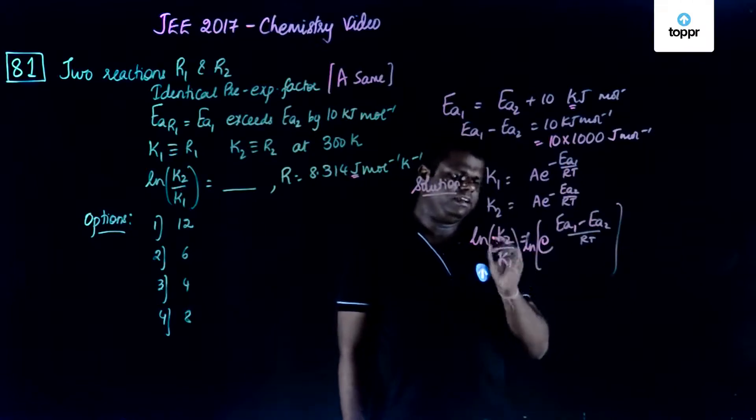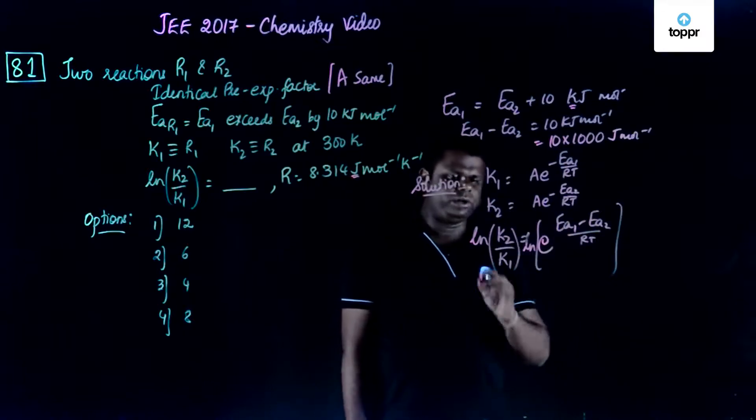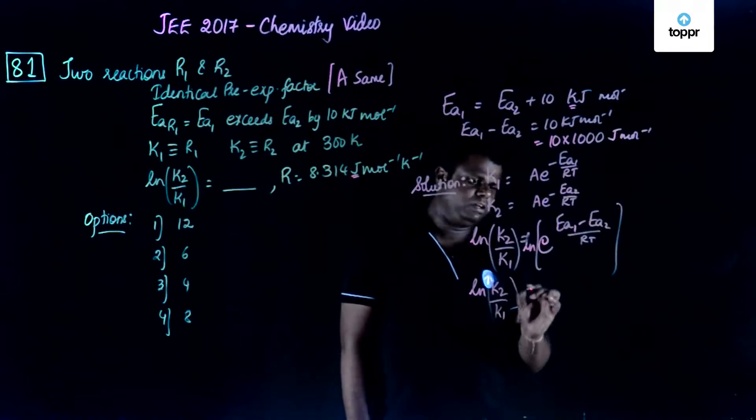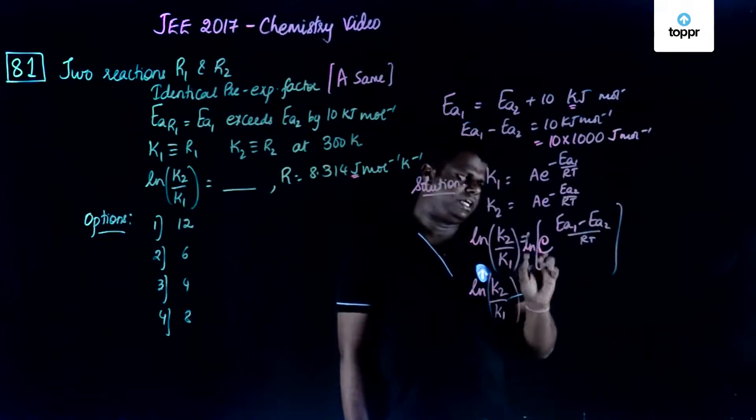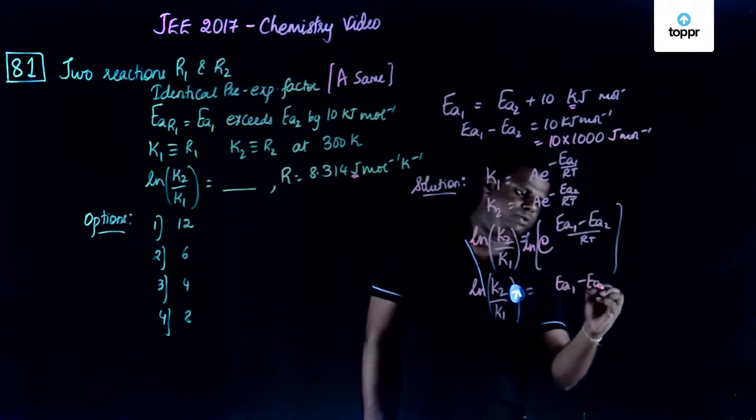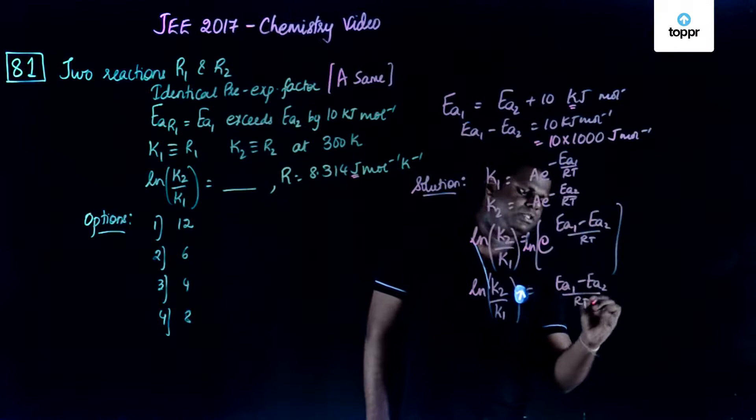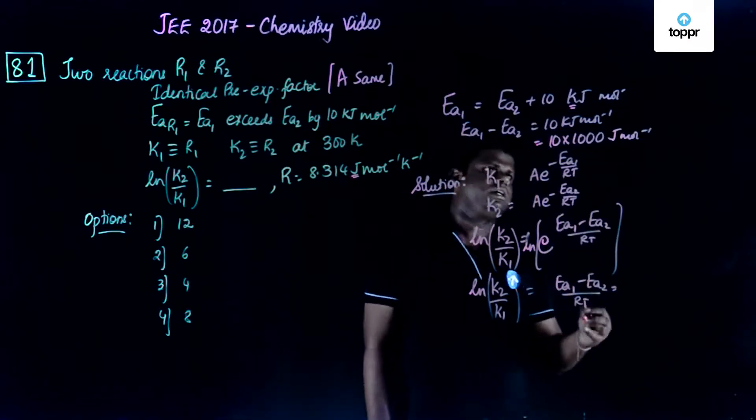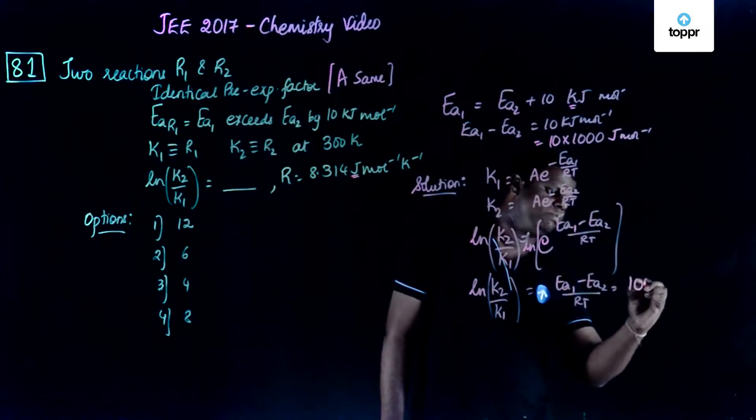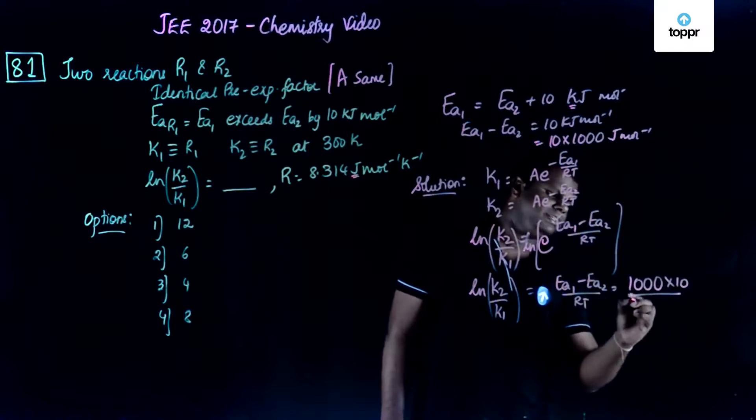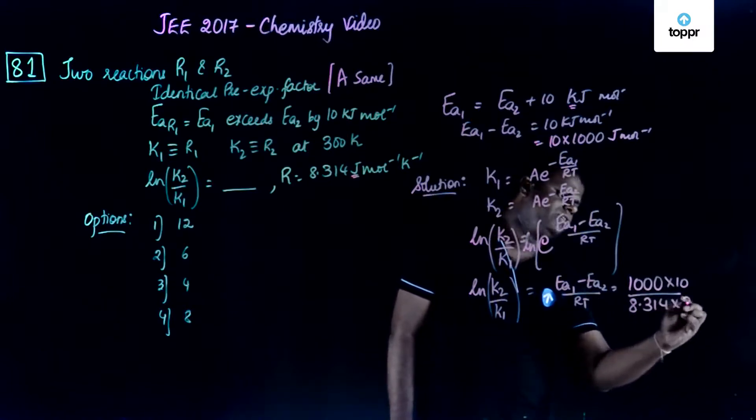I've taken ln directly here, so ln(k2/k1) will be equal to ln e raised to this entire quantity. Since ln e to the base e equals 1, it would be (Ea1 minus Ea2) upon RT. You already know Ea1 minus Ea2 is 10 kilojoule, which is 10 into 1000 joule per mole.